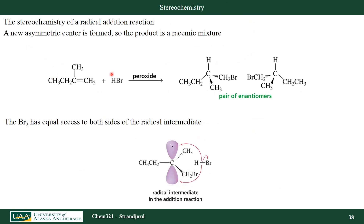How about stereochemistry for HBr addition? Because I'm going through a radical intermediate again, I am going to have stereochemical consequences. I see that I get a racemic mixture of products. I have HBr, peroxide, and an alkene. I'm going to add the hydrogen to the most substituted and the bromine to the least substituted. I form a pair of enantiomers because going through a radical intermediate, I could attack from the top side or from the bottom side.